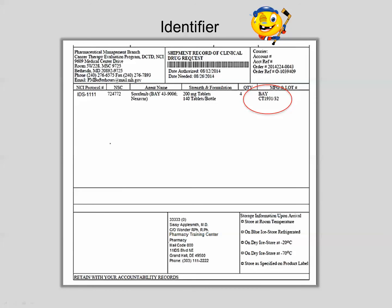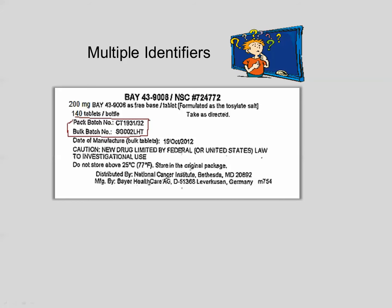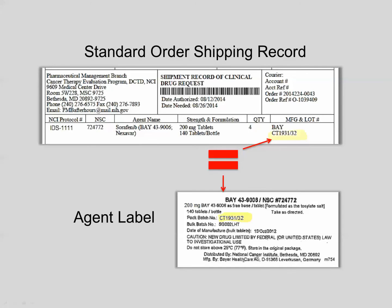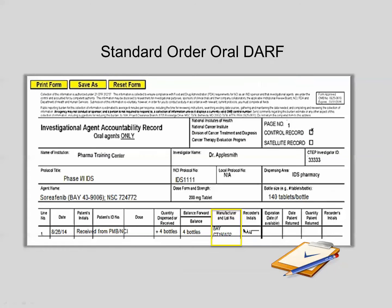Now let's discuss the identifier. In this shipping record, the identifier is CT1931-32. However, upon receipt of the agent, you also checked the bottles and found that the label of the bottle has two identifiers: a pack batch identifier and a bulk batch identifier. You should use the agent label identifier that matches the identifier on the shipping record. Record that identifier on the DARF in the manufacturer and lot number column. It's important to record the correct identifier on the DARF because stock recovery letters and recall letters are tracked using this identifier.